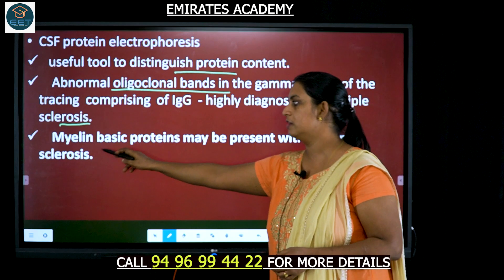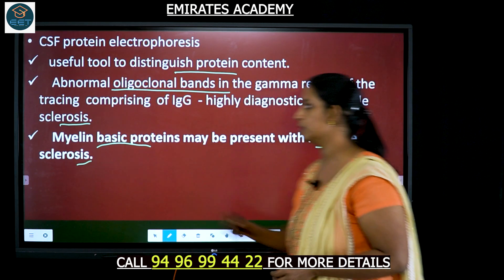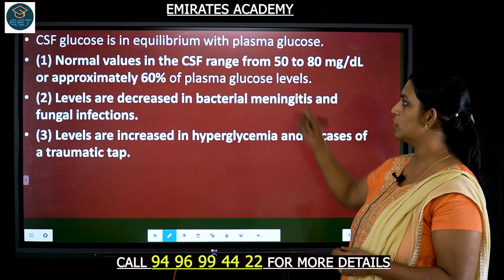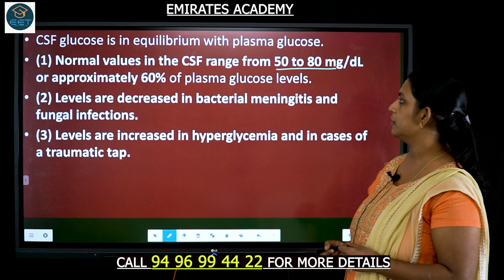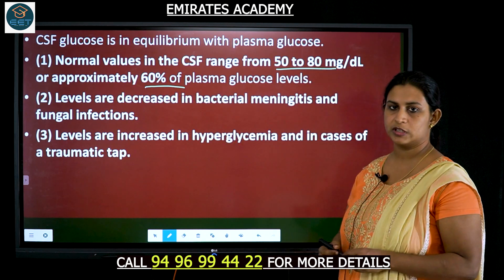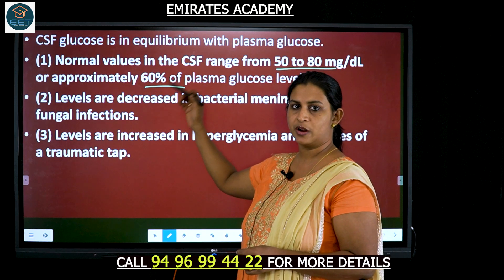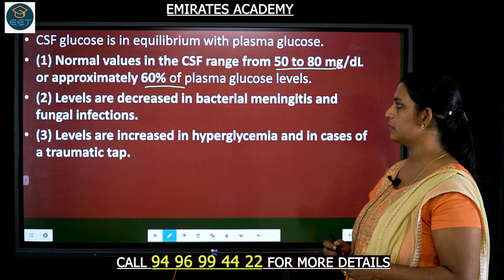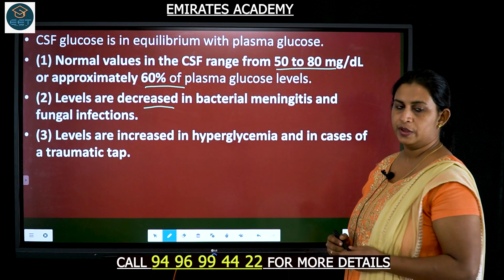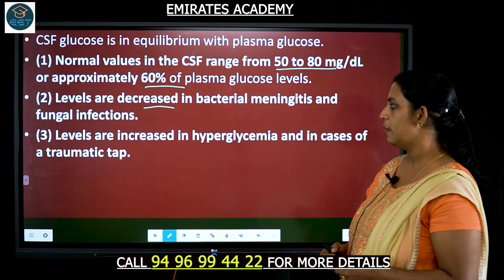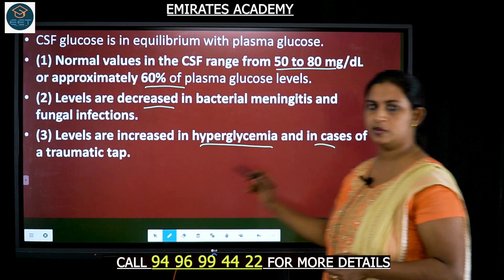Proteins such as myelin basic proteins, if present, also indicate multiple sclerosis. The normal values of glucose in the CSF range from 50 to 80 milligrams per deciliter, which is approximately 60% of the plasma glucose levels. When there is an infection such as bacterial meningitis or fungal infections, the glucose levels would be decreased. If there is an increase in glucose level, it could be due to hyperglycemia or a traumatic tap.